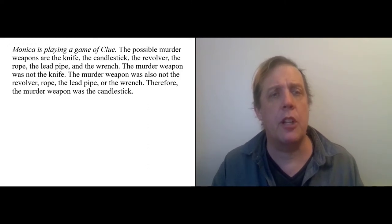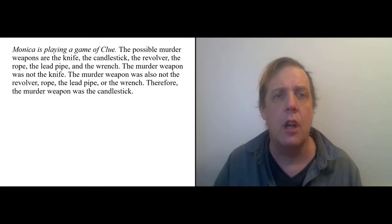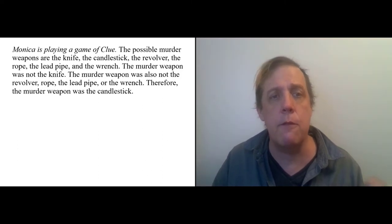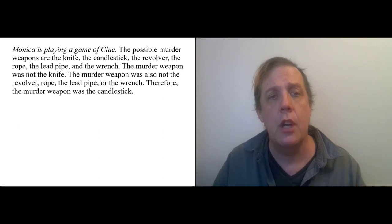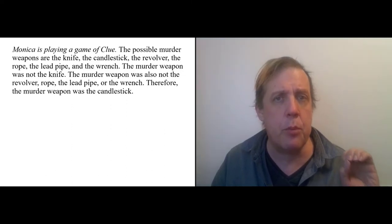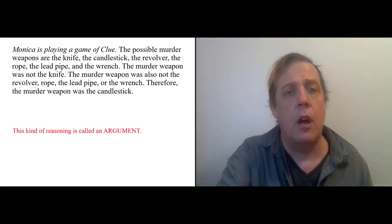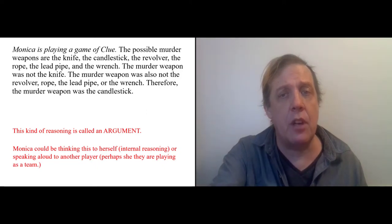So here's a simpler form of an argument. Imagine Monica, a person, she's playing Clue, that old board game where you're a detective trying to solve a murder. Monica can say to herself, the possible murder weapons are the knife, the candlestick, the revolver, the rope, the lead pipe, and the wrench. The murder weapon was not the knife. The murder weapon was not the revolver, the rope, the lead pipe, or the wrench. Therefore, the murder weapon was the candlestick. This is a standard example of reasoning. It's reasoning by process of elimination, right? And if you play the game Clue, it's all about the process of elimination. This kind of reasoning that she's engaged in is what we're calling argument. And this is something that Monica could be thinking to herself, internal reasoning, or speaking out loud to someone else, like they're playing on a team. But in any case, all of the elements of an argument are here. You have a series of statements. Some of them support others. Some are premises, some are conclusions.